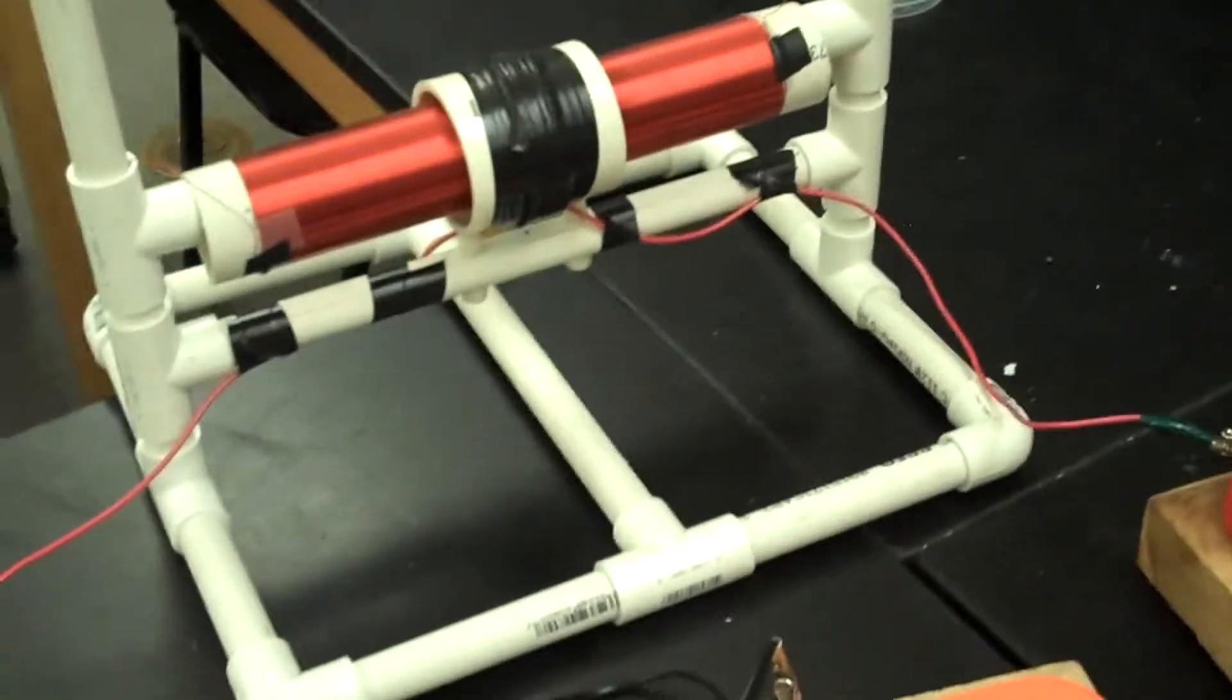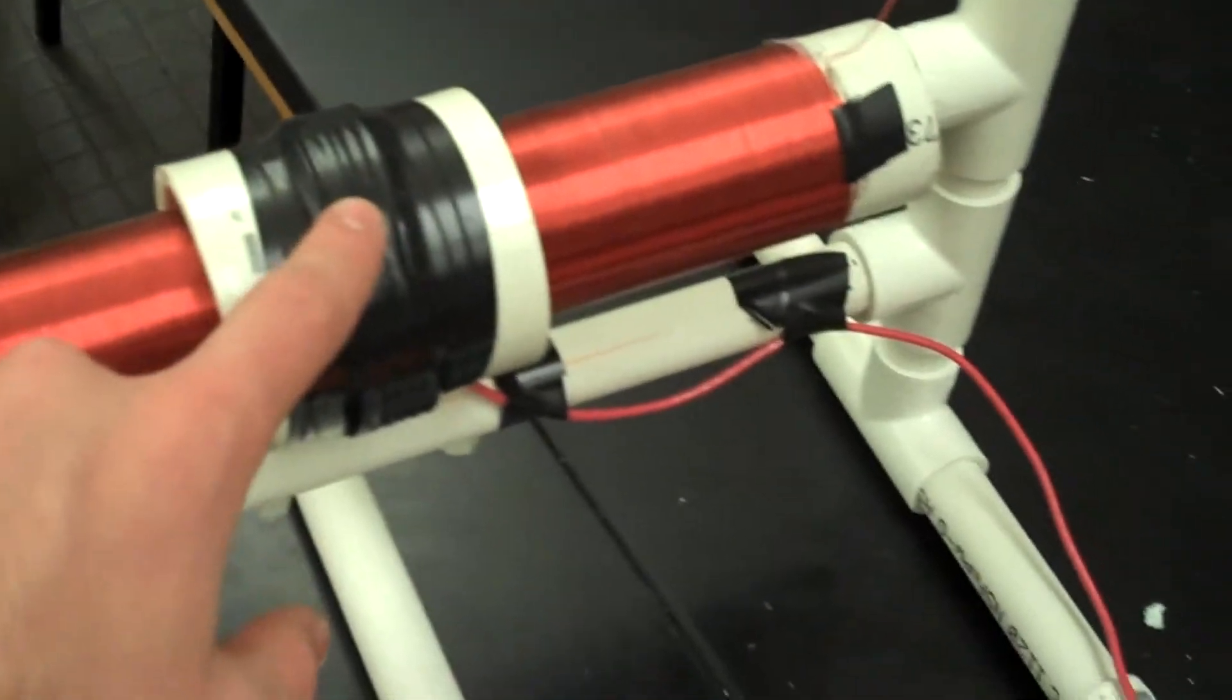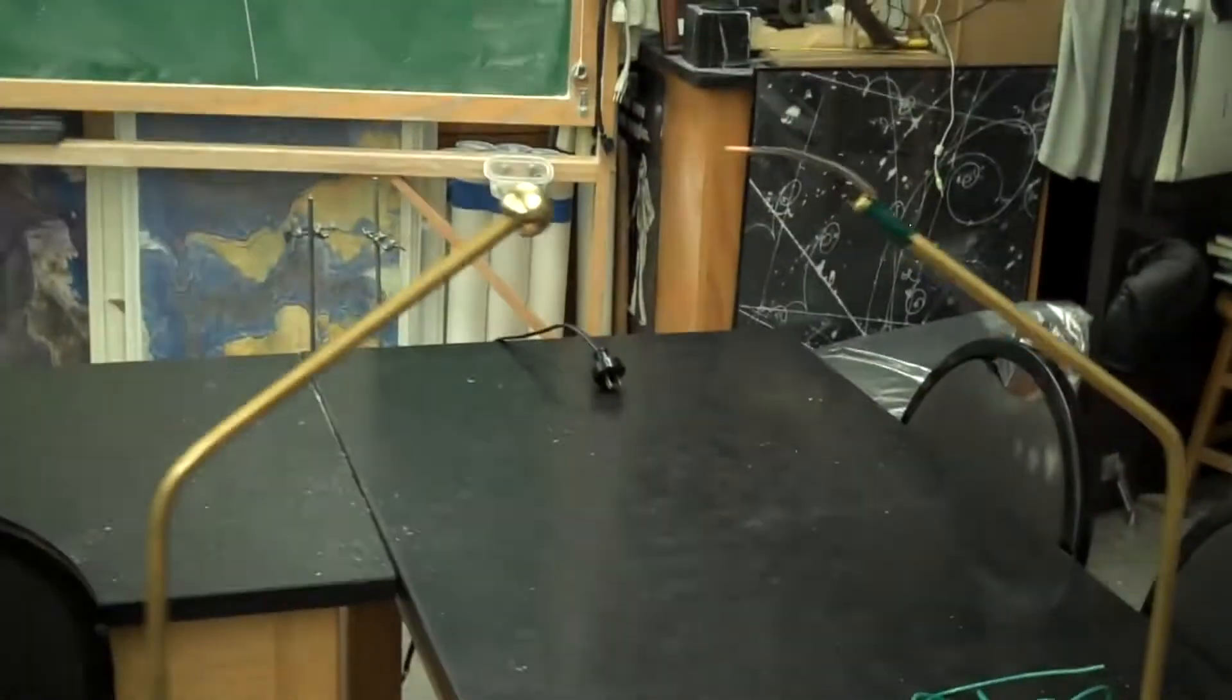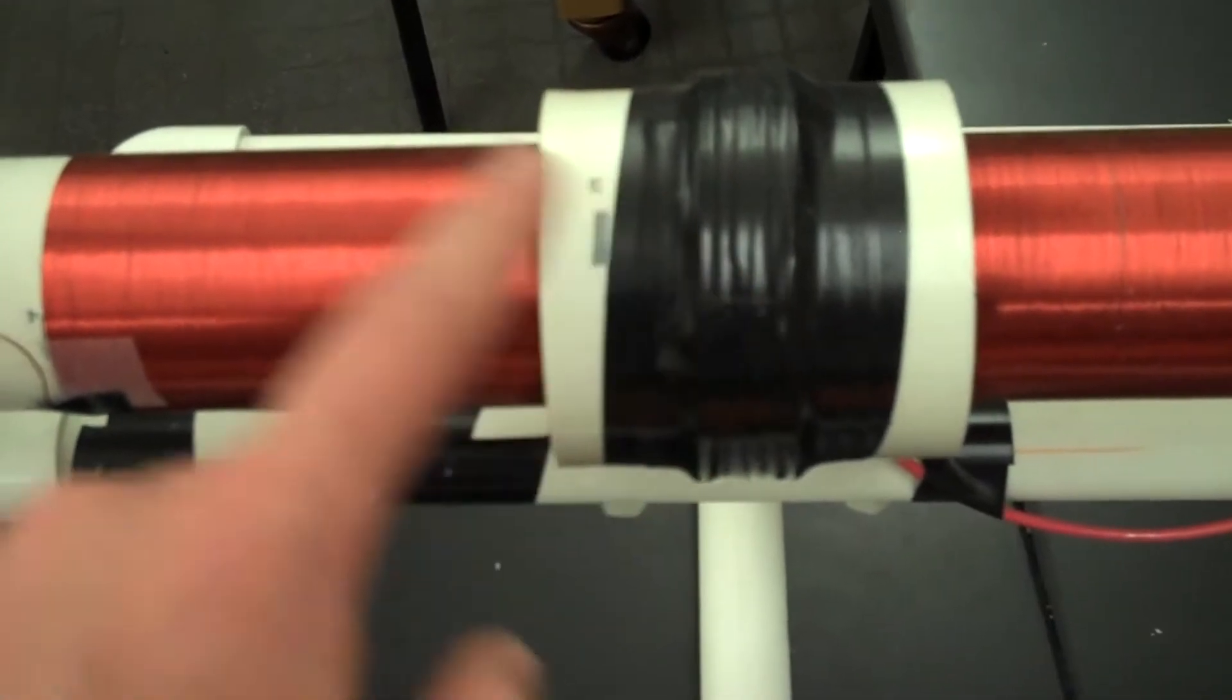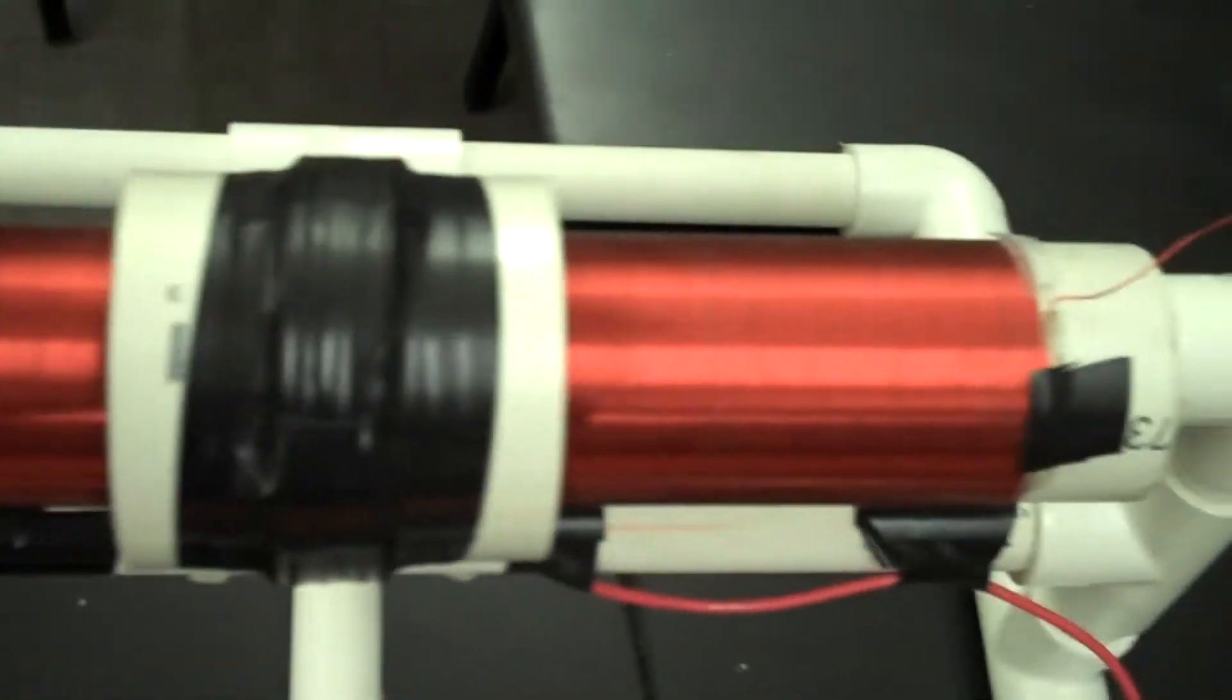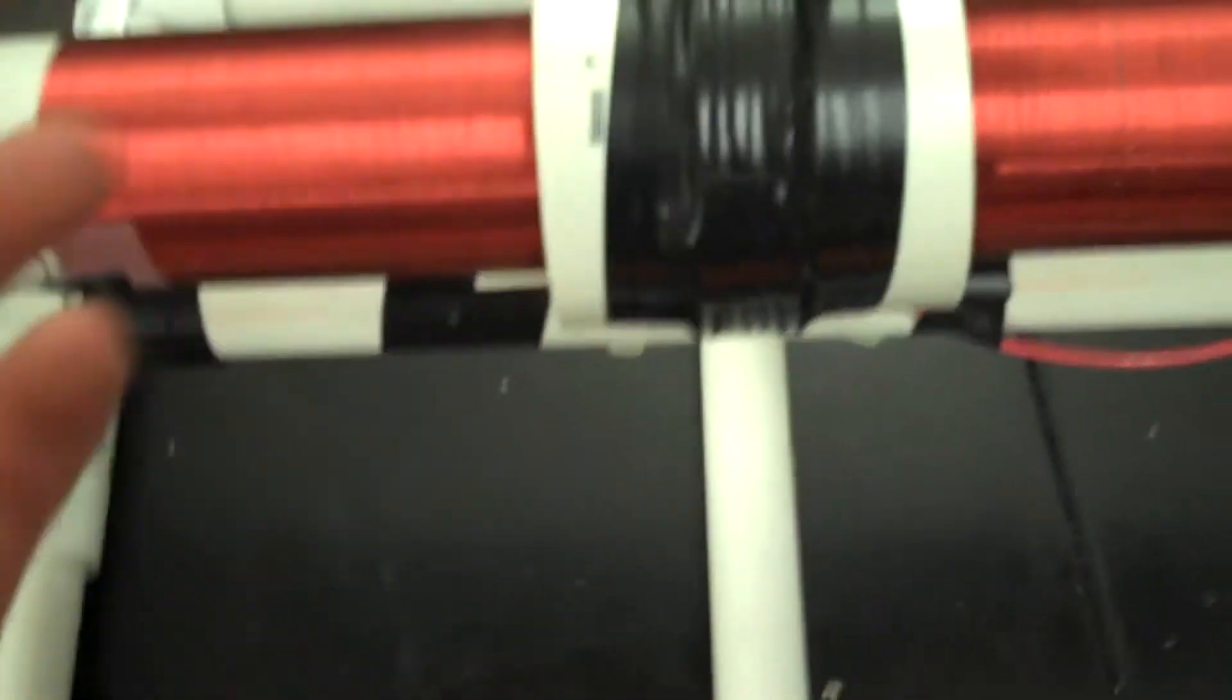And so what Tesla did was he said, if you have one LC circuit, you can couple that with another LC circuit and transfer energy. So the secondary is coupled through the coil. So the inductor in the primary circuit surrounds an inductor for the secondary circuit, which has many more turns and the turns do the magnetic field, has inductance.